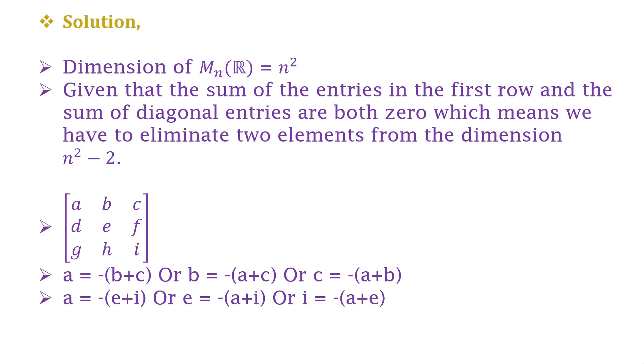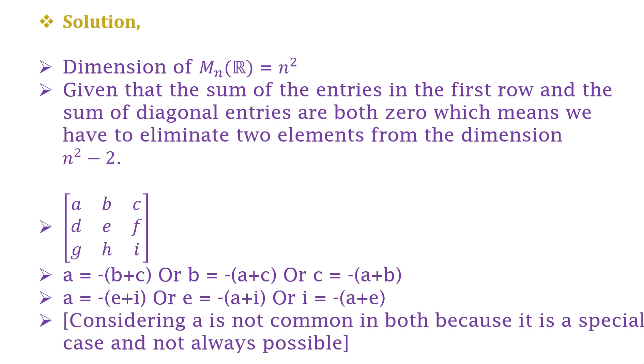Any of the two cases are possible and we also consider that a is not common in both because it is a special case and which is not always possible. For it to be true, b+c should be equal to e+i which is not always the case.